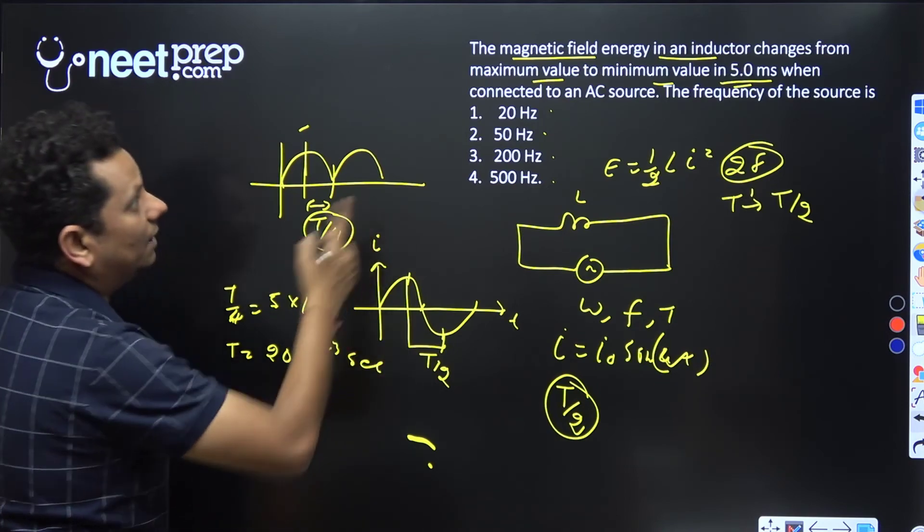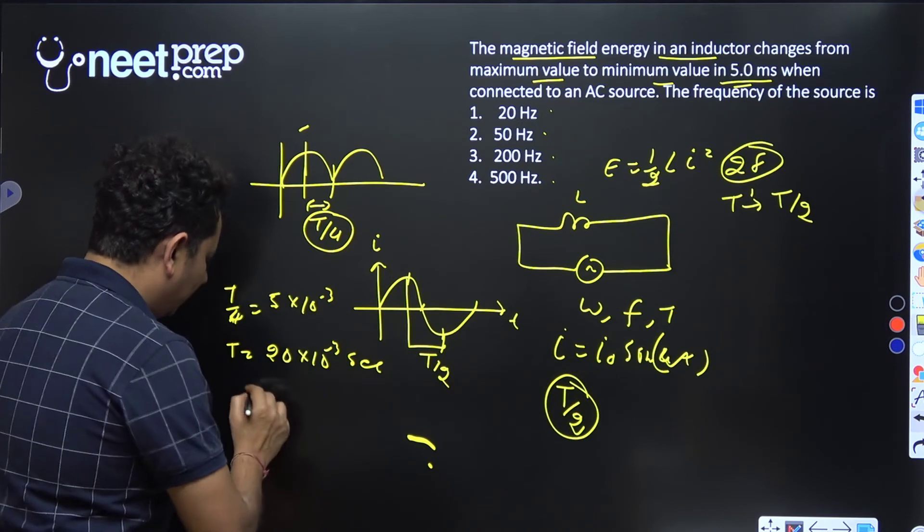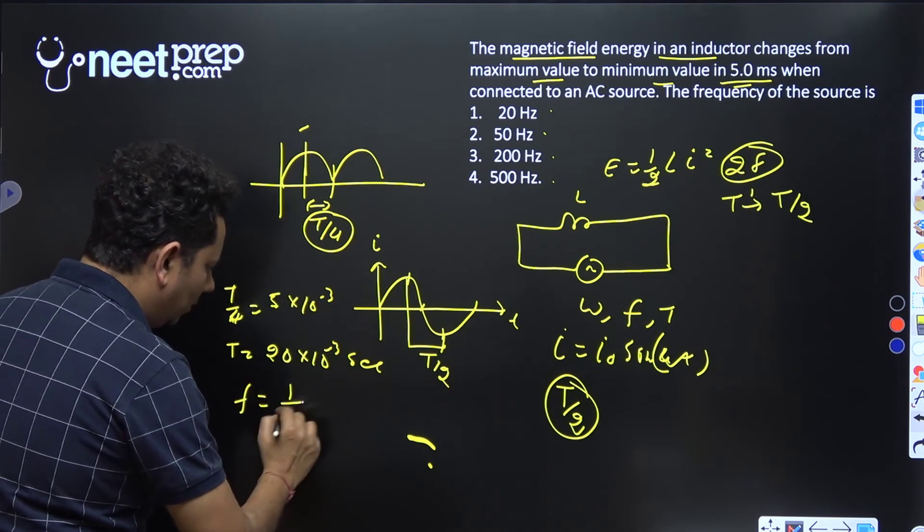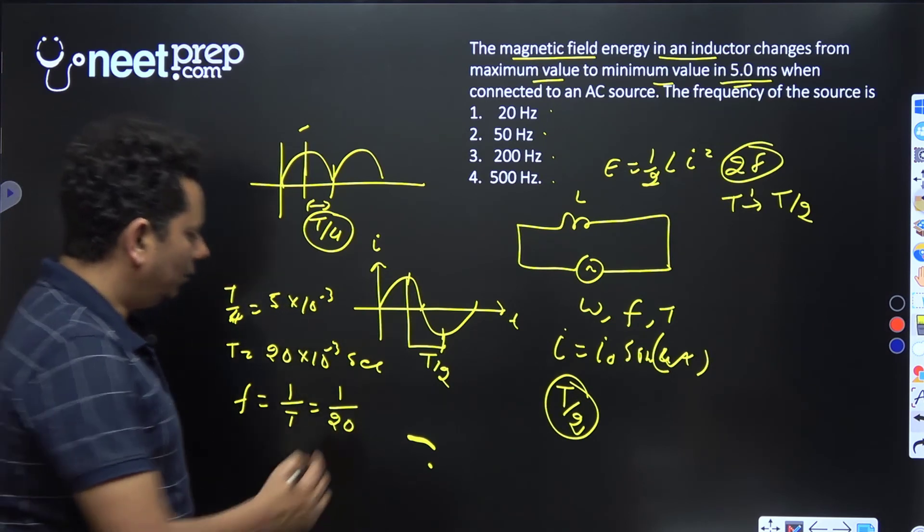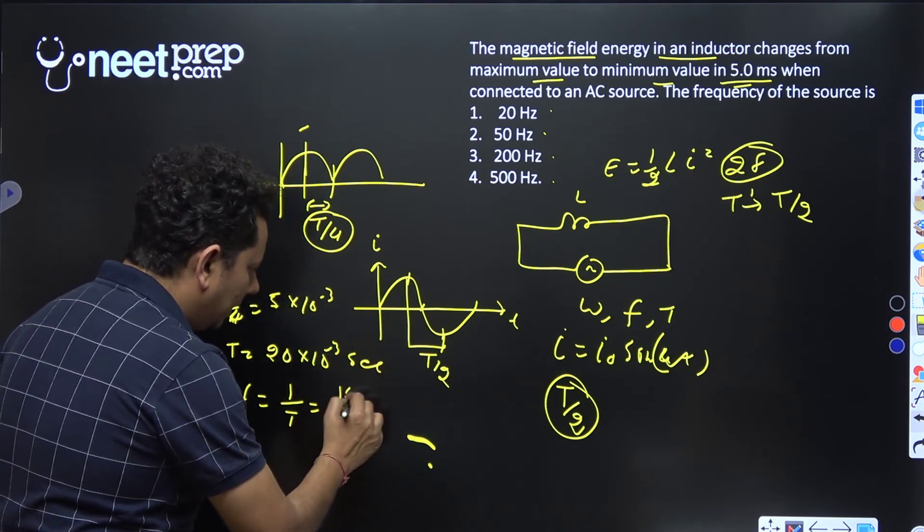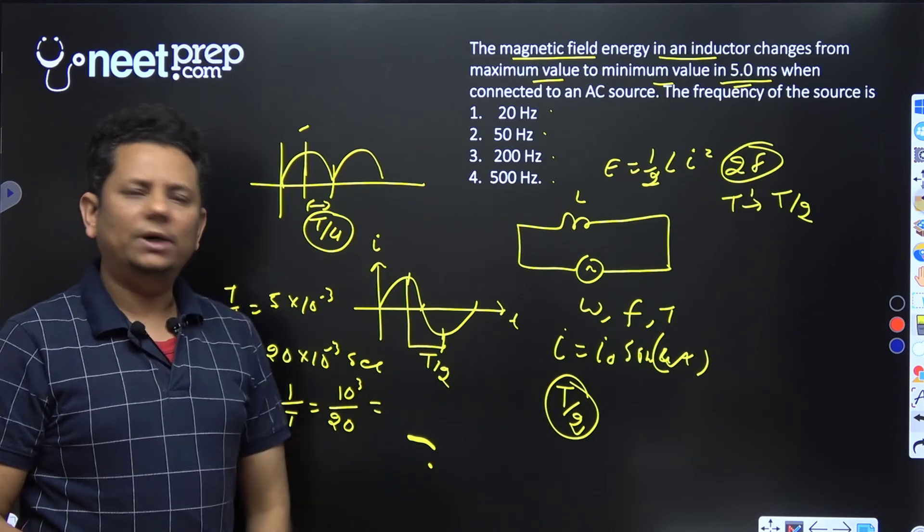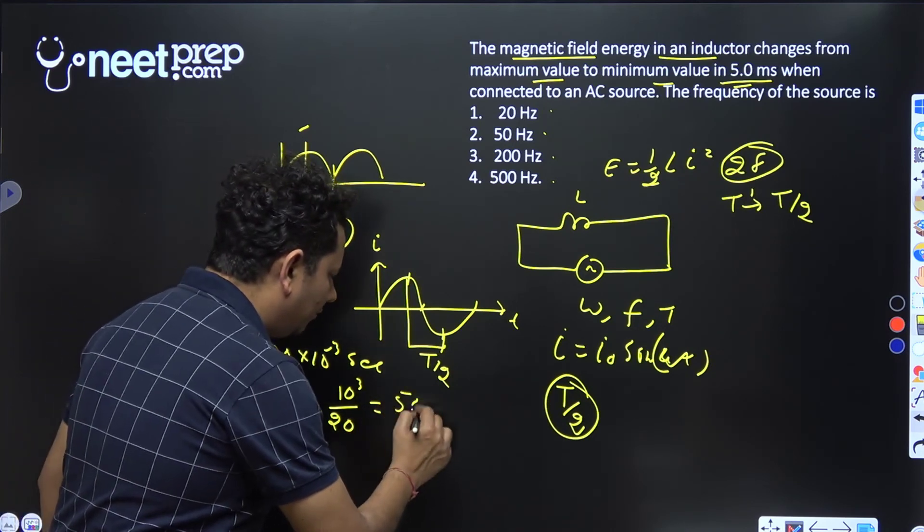The frequency f = 1/T = 1/(20 × 10⁻³) = 10³/20 = 50 hertz.